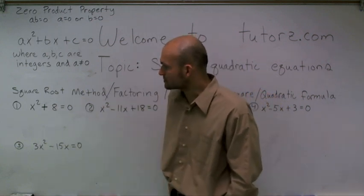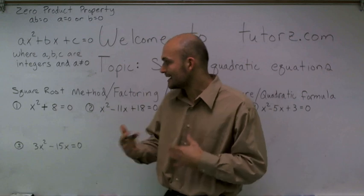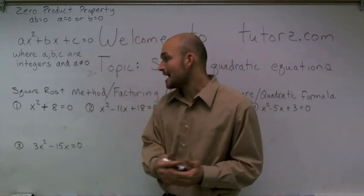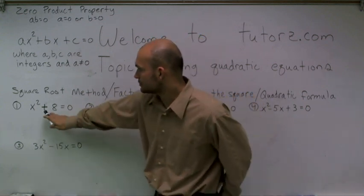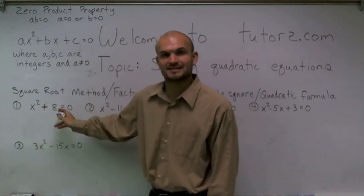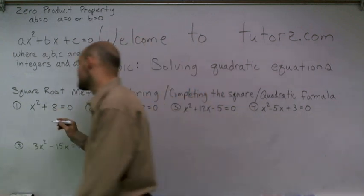So for the first one, which is called the square root method, what you're going to do is isolate the variable. A lot of students like this method because it reminds them of solving linear equations. You're going to get your x squared by itself. So I have x squared plus 8. To undo my operation of adding 8, I'm going to subtract 8 on both sides.